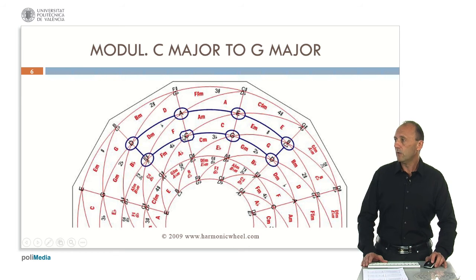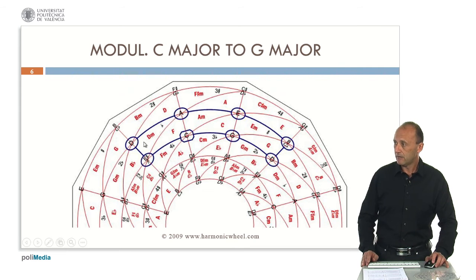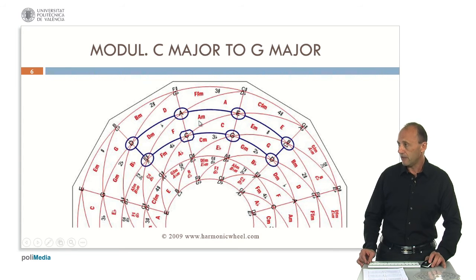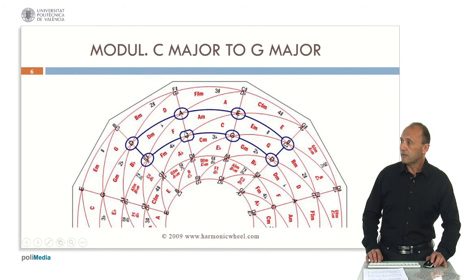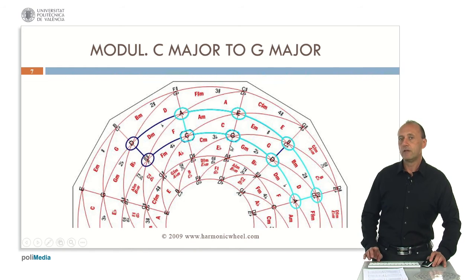Here we have the C major key. The tonic is C inside this little rectangle. We can observe that note G is one step to the right of C. So if chords in C major are from here to here in the region, the chords belonging to G major will be from here to here, as we can see in this figure. This is the C major key containing these six consonant chords and this is the G major key containing these six consonant chords. So the chords belonging to both keys are A minor, C major, E minor, G major.